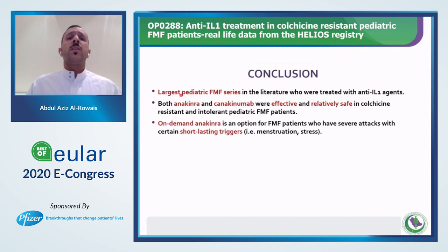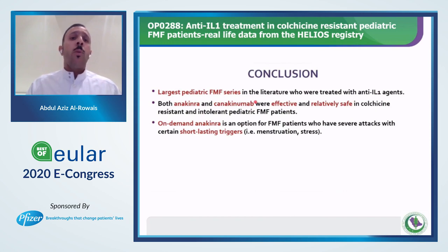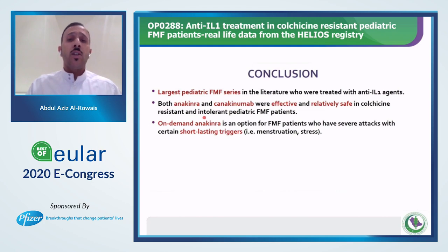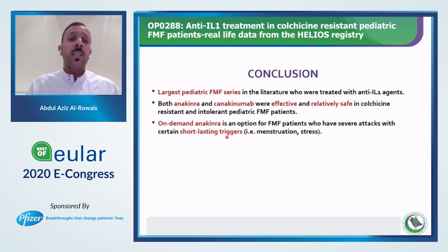Regarding safety: local injection site reactions in 11 patients with anakinra — they were switched to canakinumab. Three hospitalizations due to minor infections. Leukopenia developed in two patients with anakinra and thrombocytopenia in one patient with canakinumab. No malignancies were encountered. In conclusion, this is the largest pediatric FMF series treated with anti-IL-1 agents. Both anakinra and canakinumab were effective and relatively safe in colchicine-resistant and intolerant pediatric FMF patients. On-demand anakinra is an option for severe attacks with certain short-lasting triggers like menstruation or stress periods.